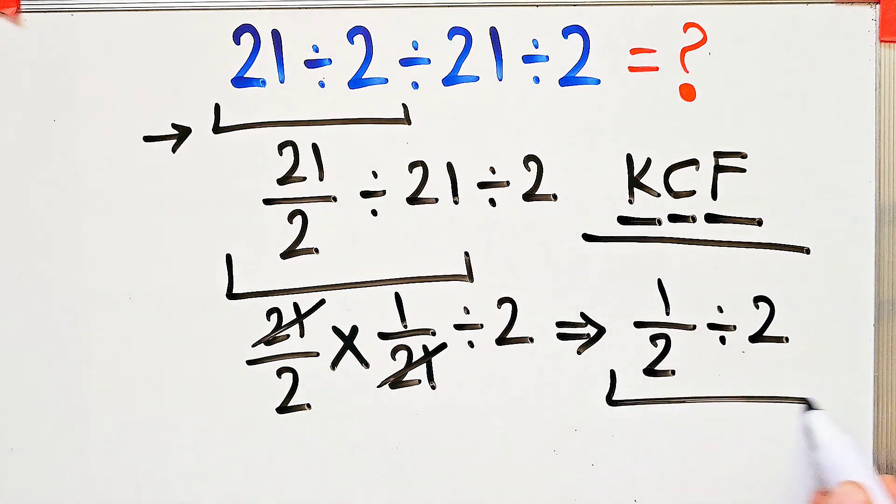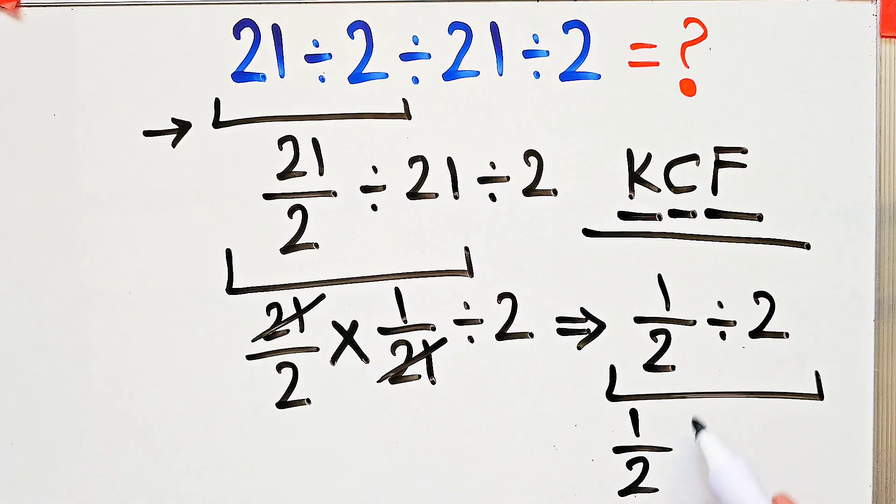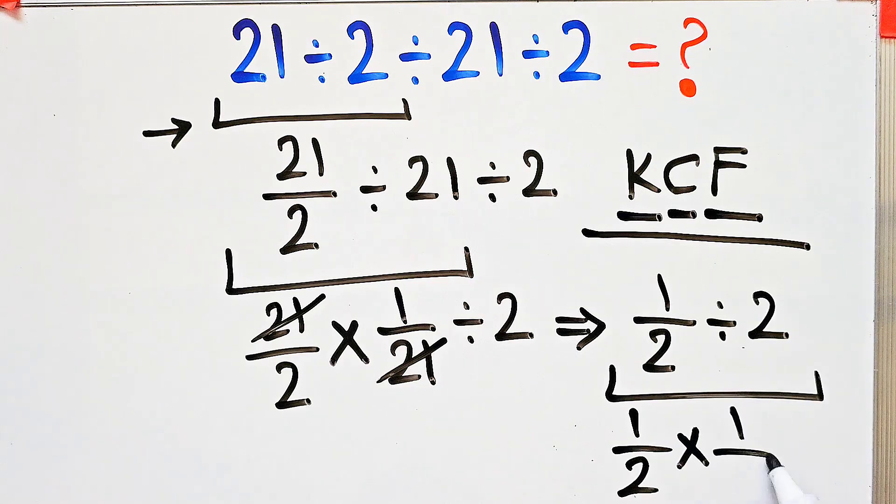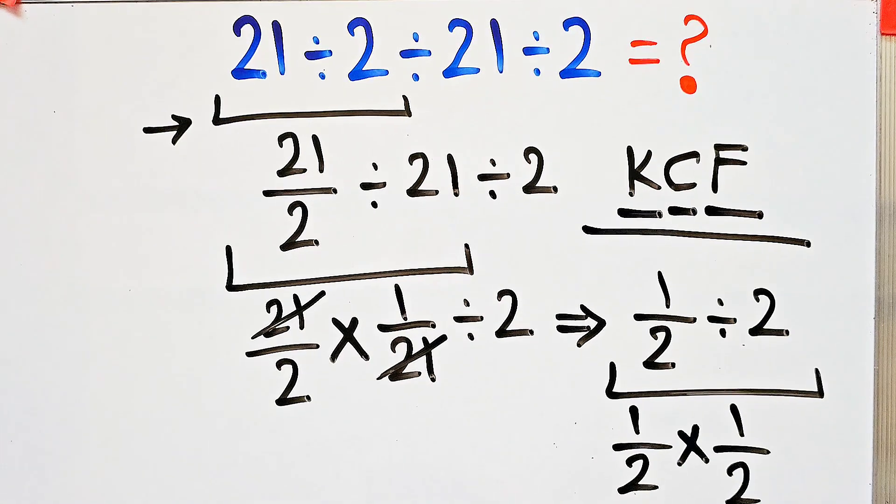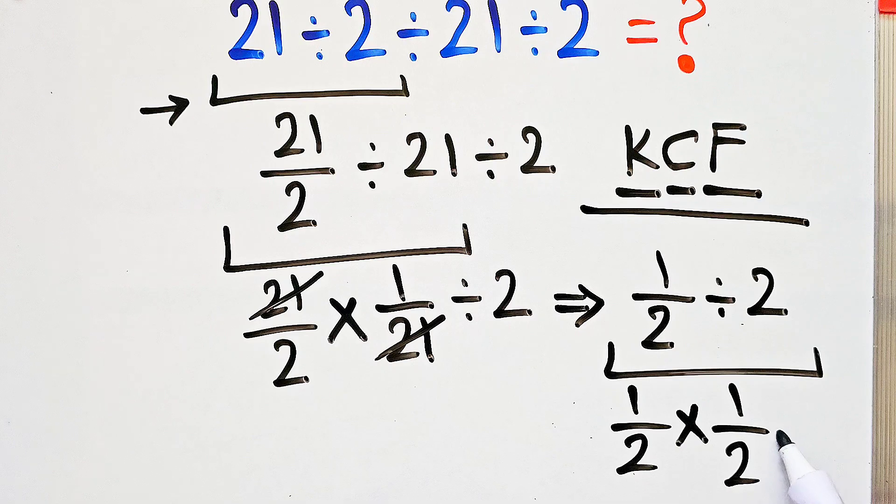We keep the first fraction as it is, then we change the division sign to the multiplication sign, and then we flip the second number. Now we have 1 over 2 times 1 over 2, which equals 1 over 4.